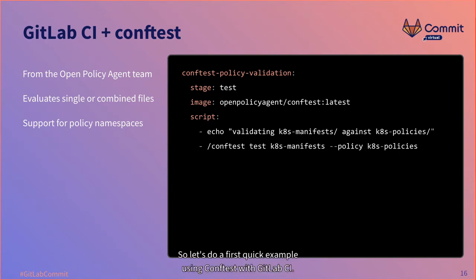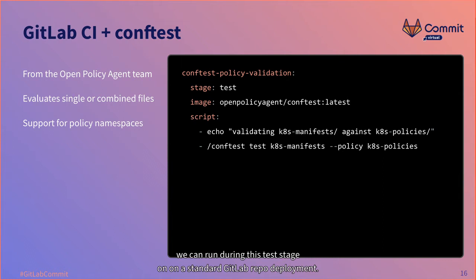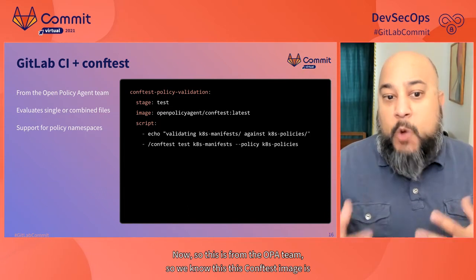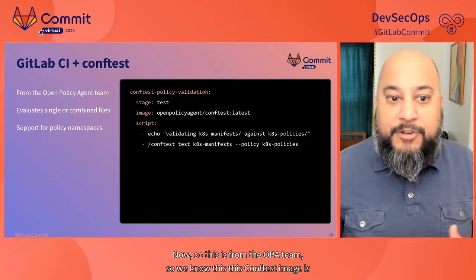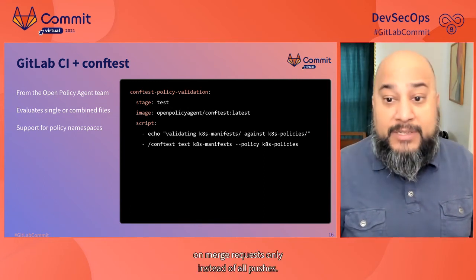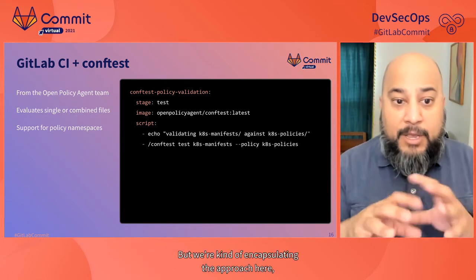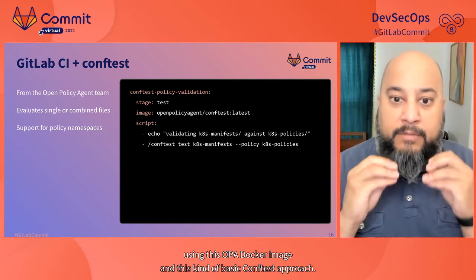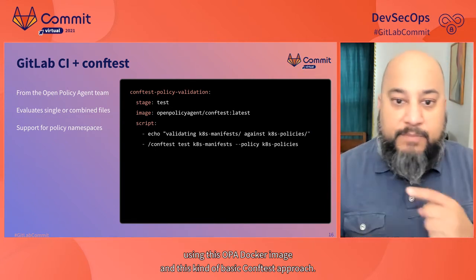Let's do a quick example using ConfTest with GitLab CI. In this example, on a code push, we can run during the test stage on a standard GitLab repo deployment and have the push tested against the existing policy objects. This ConfTest image from the OPA team is going to be updated on a regular basis, which is great. We can also configure this to happen on merge requests only instead of all pushes — we're encapsulating the approach using this OPA Docker image and this basic ConfTest approach.